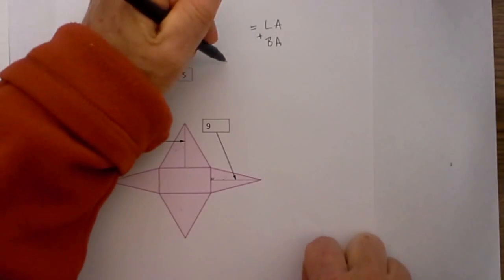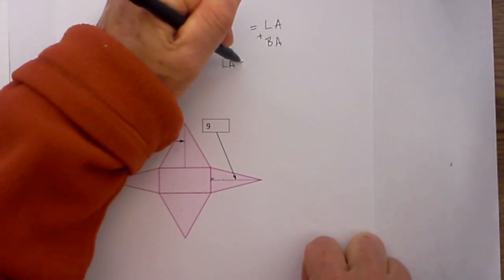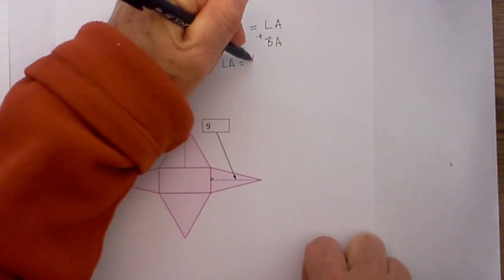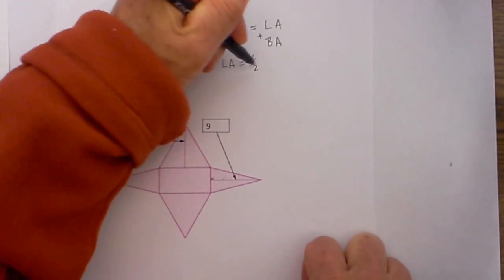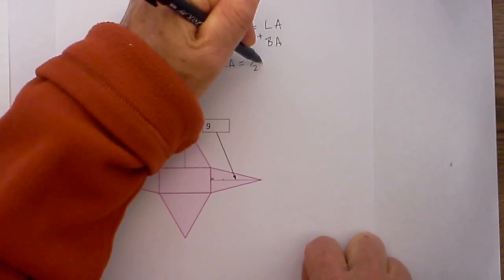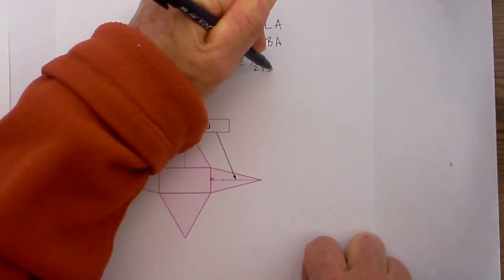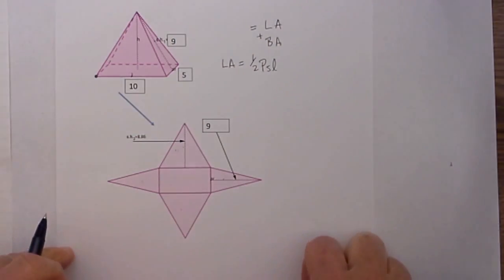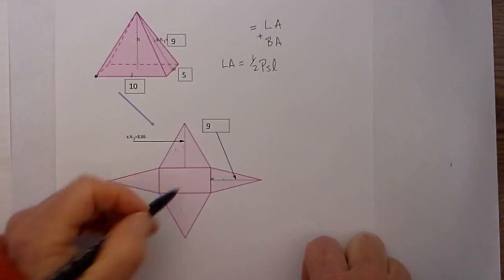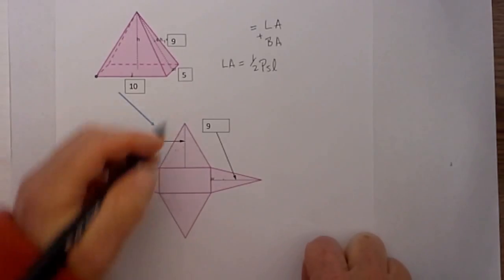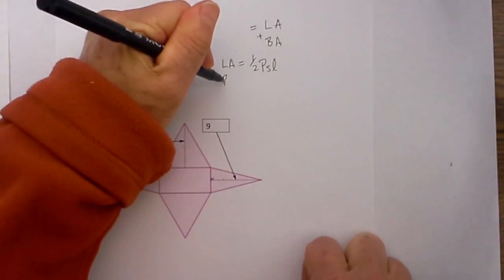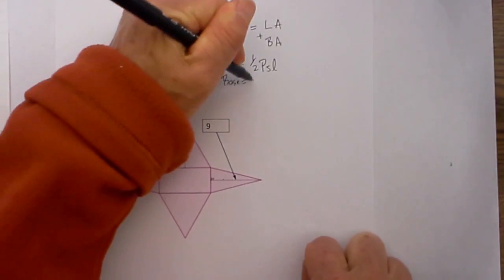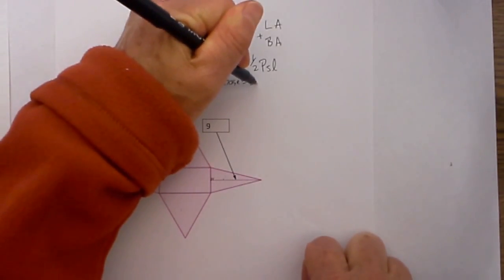The formula for lateral area is one half the perimeter times the slant length. Then for the base, since it is a rectangle, I am going to use length times width.